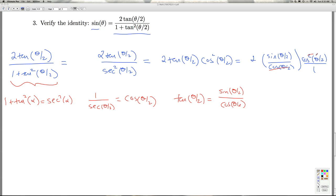So what happens is I get cancellation here. And so, I get 2 tangent theta over 2, over 1 plus tangent squared theta over 2, equals 2 sine theta over 2, cosine theta over 2.